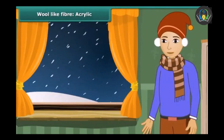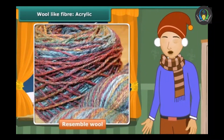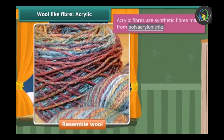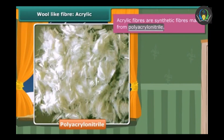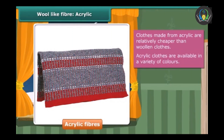To protect us against the cold winters, we wear sweaters, shawls and use blankets. Do you know that many of these are actually not made from natural wool, though they appear to resemble wool? These are synthetic fibers made from polyacrylonitrile. Acrylic is lightweight, soft and worn with a wool-like feeling. Wool obtained from natural resources is quite expensive, whereas clothes made from acrylic are relatively cheaper. Acrylic clothes are available in a variety of colors, which is not always possible with natural wool.